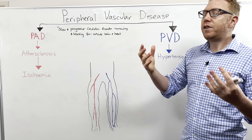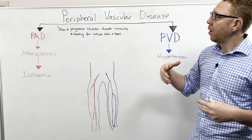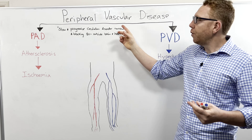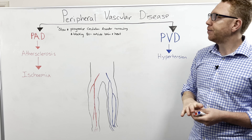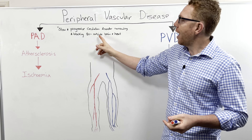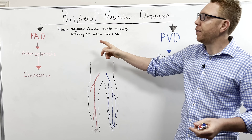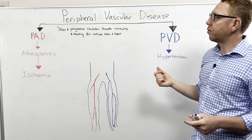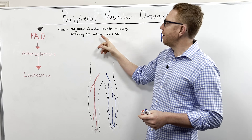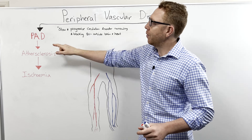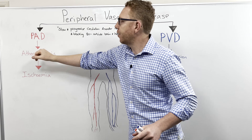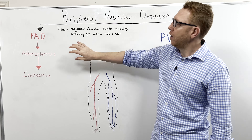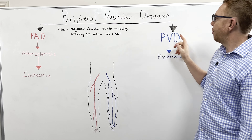Let's start with a broad definition of what peripheral vascular disease actually is. It's a slow progressive circulation disorder narrowing and blocking blood vessels outside the brain and heart. When we say outside brain and heart, this refers to the peripheral. There are two subtypes based on blood vessels: arteries and veins — peripheral arterial disease and peripheral venous disease.